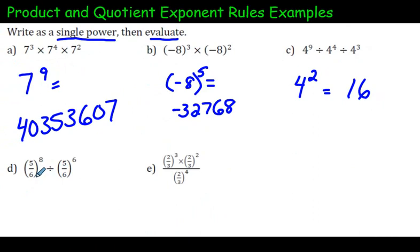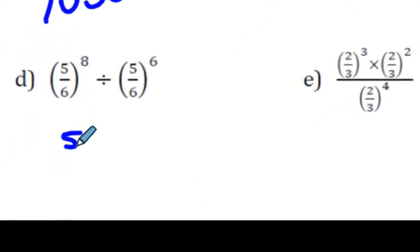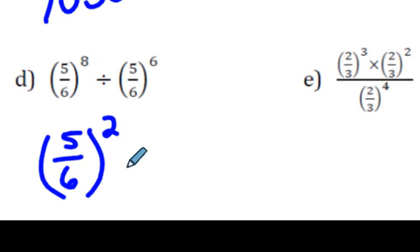Let's move to the next one. The base is 5 over 6, 5 sixths if you like to say it that way. Remember we're dividing, so when you divide you subtract the exponents. And if we evaluated this, this one's a little more interesting because it's a fraction with an exponent on the outside.